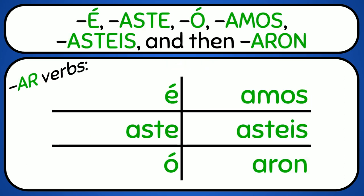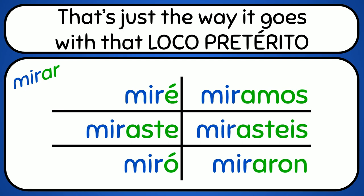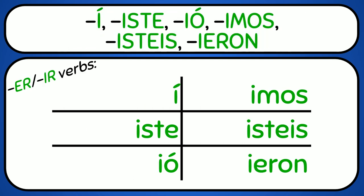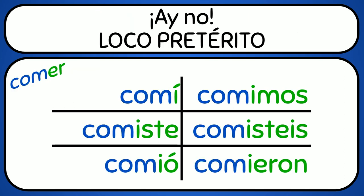E, aste, o, amos, asteis, aron. That's just the way it goes with that loco preterito. E, aste, o, amos, asteis, aron. Ay no! Loco preterito!